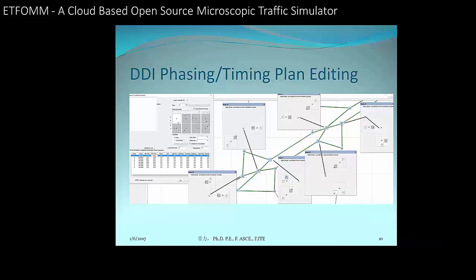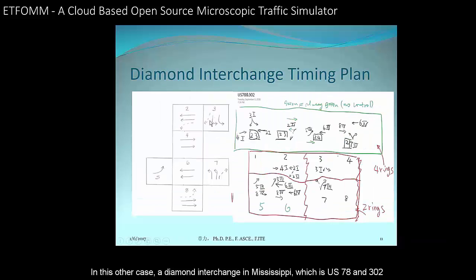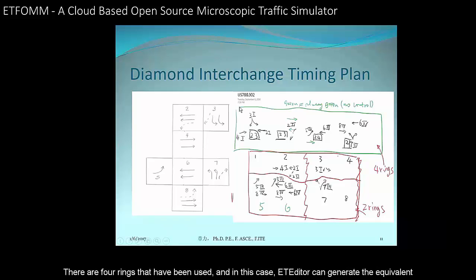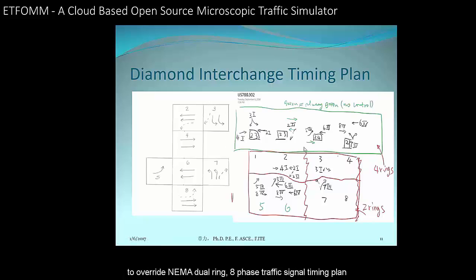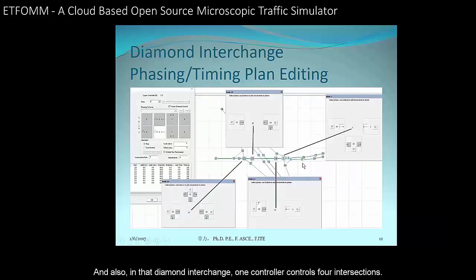In another case — a diamond interchange in Mississippi at US 78 and 302 — four rings are used in the timing plan, and one controller controls four intersections at that diamond interchange.